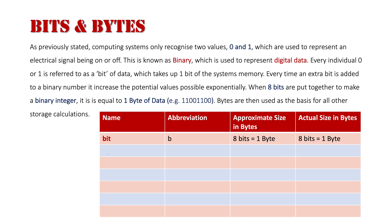We know that eight bits equals one byte. The next value is a byte, abbreviated with a capital B — one byte equals a byte, both approximate and exact. It gets complicated when we talk about a kilobyte. When we say kilo, that means a thousand, so hence why it's a thousand bytes.